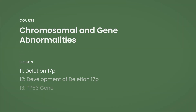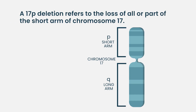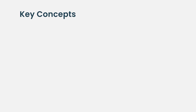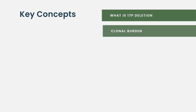In this HealthTree University lesson, we'll dive into key questions about 17P deletion in multiple myeloma. A 17P chromosome deletion refers to the loss of all or part of the short arm of chromosome 17. Join us to explore the answers and gain a deeper understanding of this important genetic abnormality.